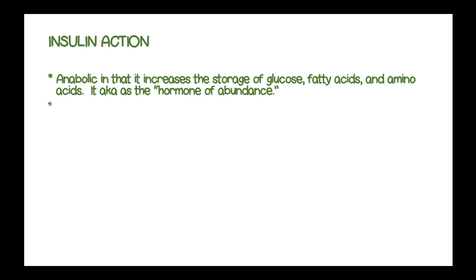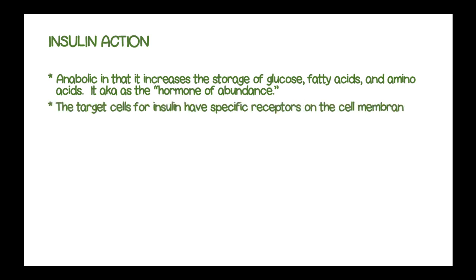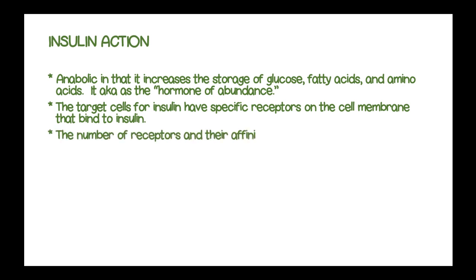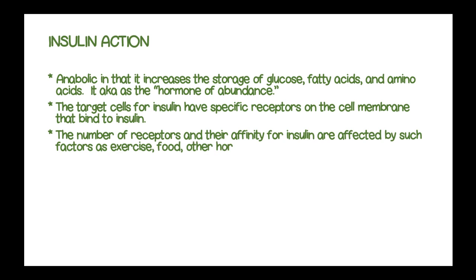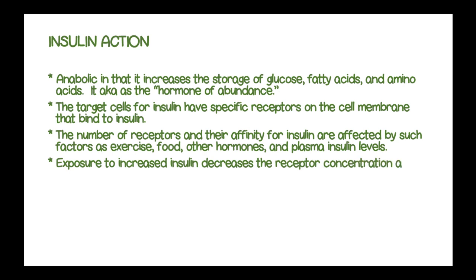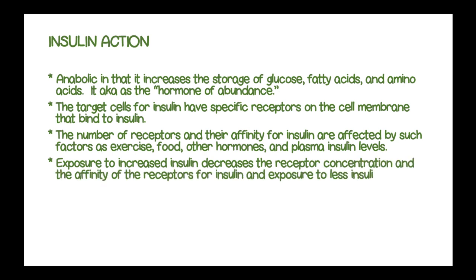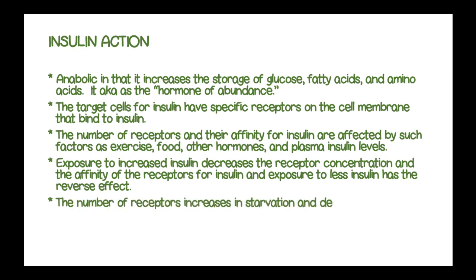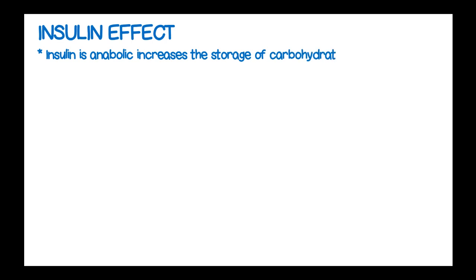The target cells for insulin have specific receptors on the cell membrane that bind to insulin. The number of receptors and their affinity for insulin are affected by factors such as exercise, food, other hormones, and plasma insulin levels. Exposure to increased insulin levels decreases the receptor concentration and the affinity of the receptors for insulin, while less insulin exposure has the reverse effect. The number of receptors increases in starvation and decreases in obesity. Thus, cells adapt to plasma insulin levels. Insulin is anabolic and increases storage of carbohydrates, proteins, and fats.